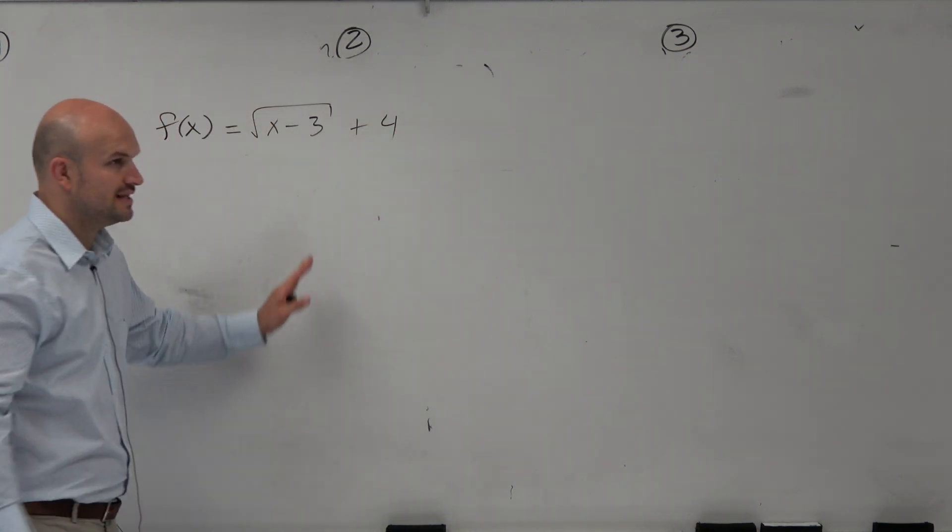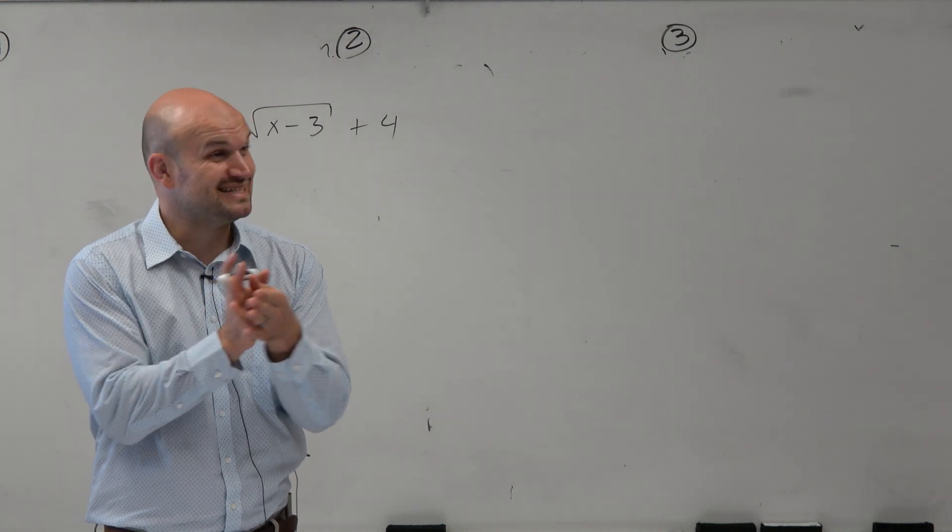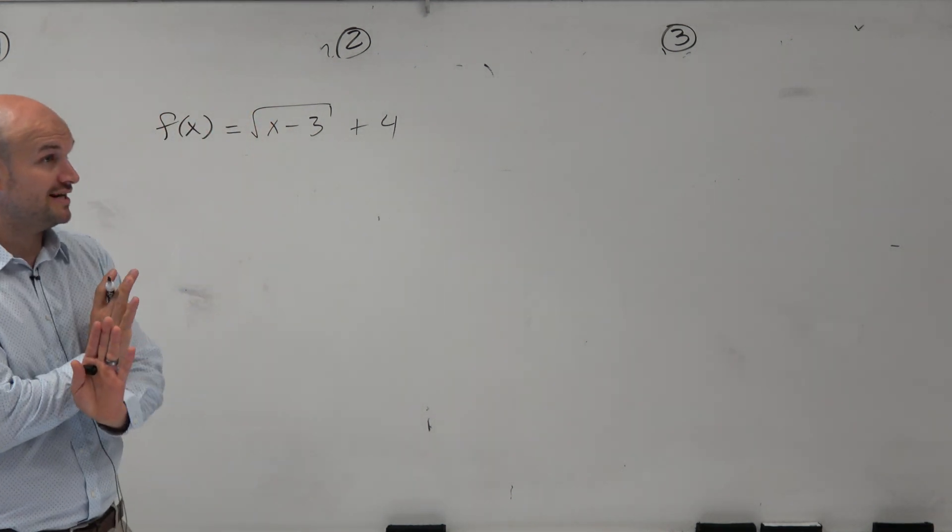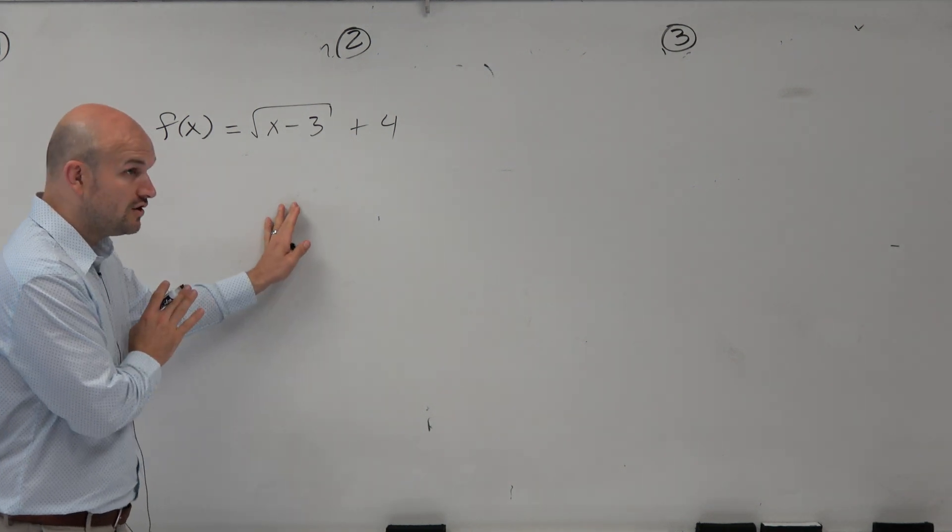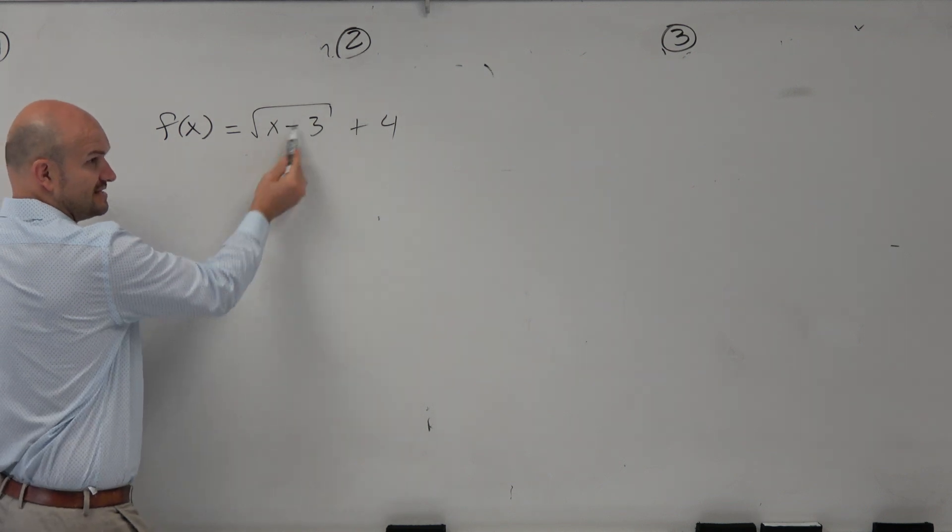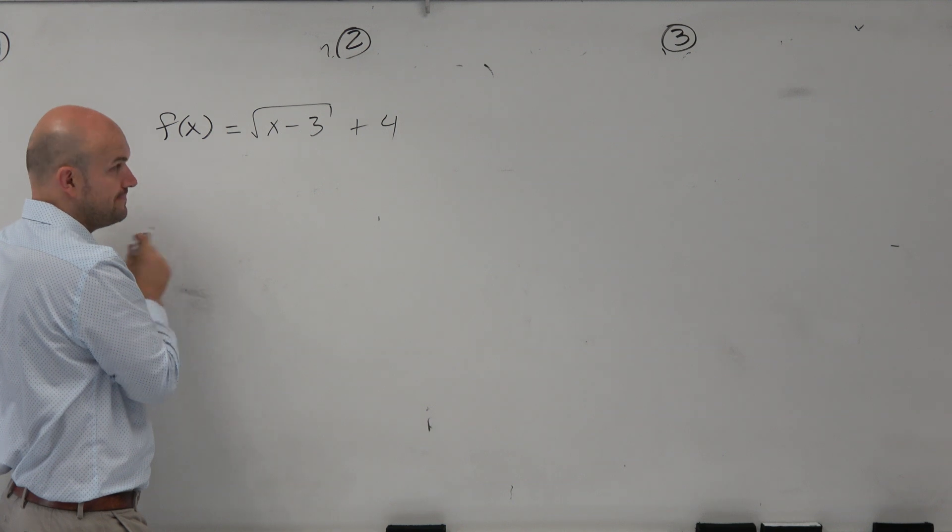Now, when I'm writing the square root, I like to put the little door here to make sure, because if something's inside versus outside, that makes a difference. We want to make sure we're not going to confuse ourselves or the teacher when grading assignments. I like to be very clear on what's inside and what's outside.